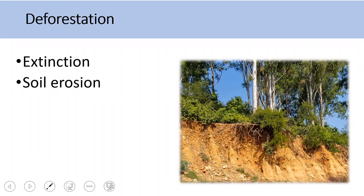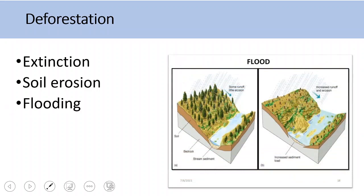The second impact is soil erosion. The roots of trees anchor the soil, and cutting the trees means nothing is holding the soil anymore. The soil can then be easily eroded by wind or water into the valleys. In addition, the soil can no longer retain or properly absorb water, so water will quickly run off into the valleys, causing huge flooding.